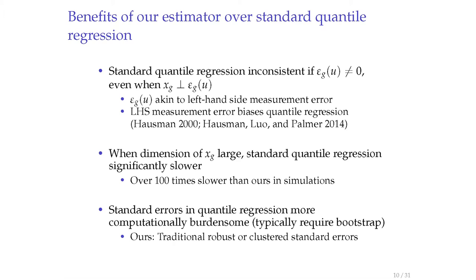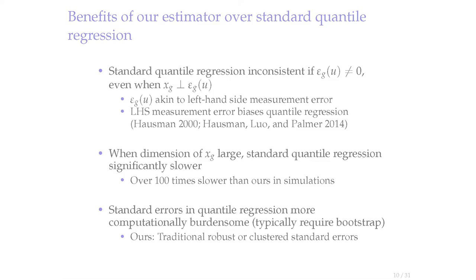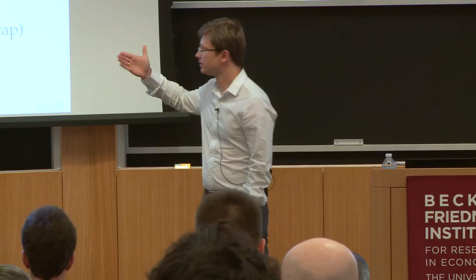But even if there are no unobserved group-level heterogeneity, our estimator still has an advantage over regular quantile regression: it's computationally simple. If you have many group-level covariates—for example, your group is a state-year cell with dummies for each state and year—running that quantile regression in Stata is problematic: it doesn't converge, it takes time. Our method is much easier. And for standard errors, quantile regression typically requires bootstrap, which means repeating the estimation many times and becomes a nightmare. Our approach gives standard errors of a two-stage least squares estimator—very simple.